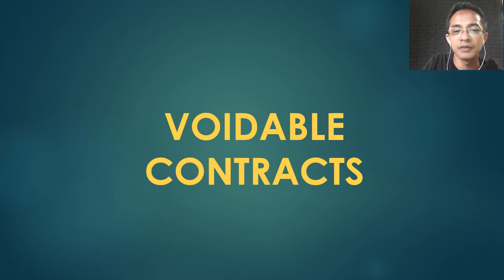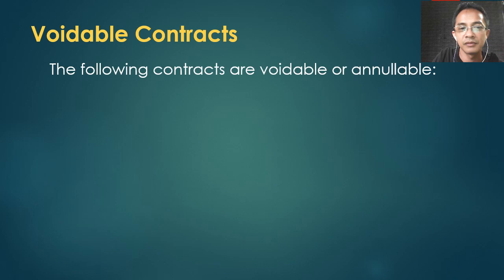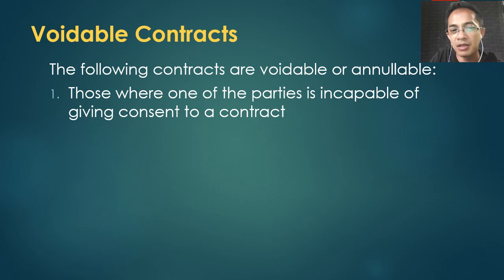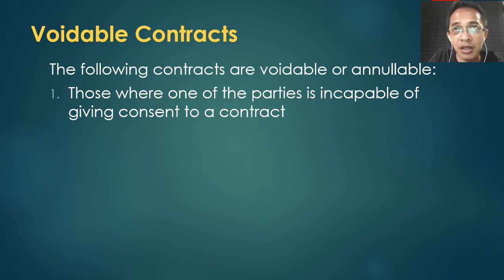Voidable or annullable contracts — some authors call these 'validable' because they are valid. These are contracts where one of the parties is incapable of giving consent — a minor, insane, or with consent vitiated by error, mistake, fraud, undue influence, threat, violence, or intimidation.